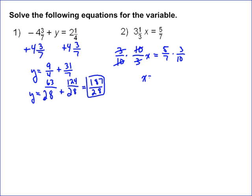So that leaves me with x equals, well, let's do some simplification. A 5 goes both into 5 and 10, so I'm left with 1 and 2. So 1 times 3 is 3, 7 times 2 is 14. And that's your correct answer.